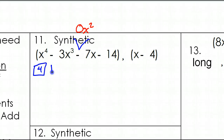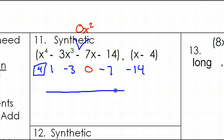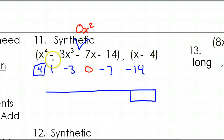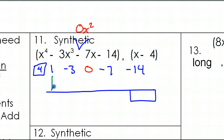So the coefficients are 1, negative 3, 0, negative 7, negative 14. Do not forget that missing term. We'll put another box at the end — this is going to be your remainder. The process is: start by just bringing down this first number, so that's 1. Then you multiply and put the answer in the next spot — always multiply by what's in the box.